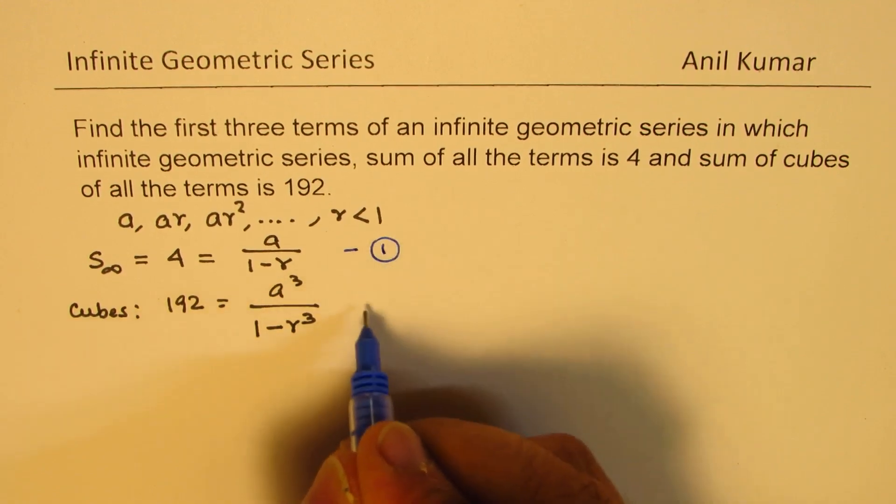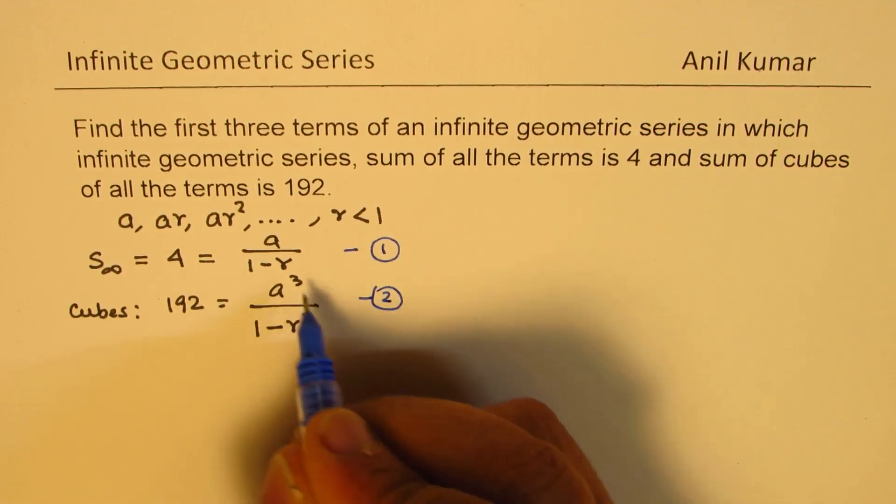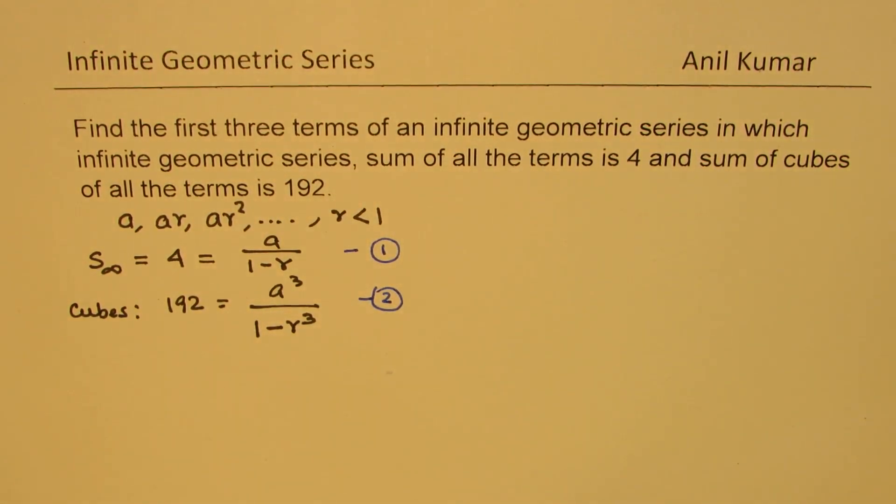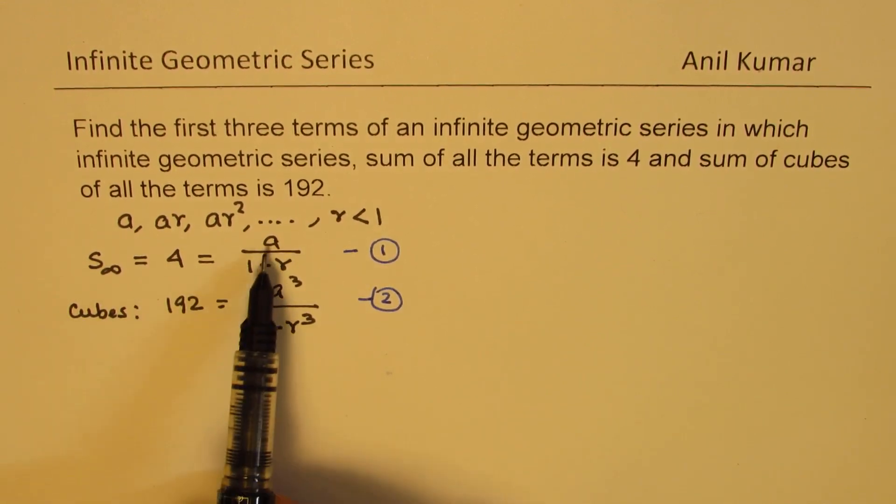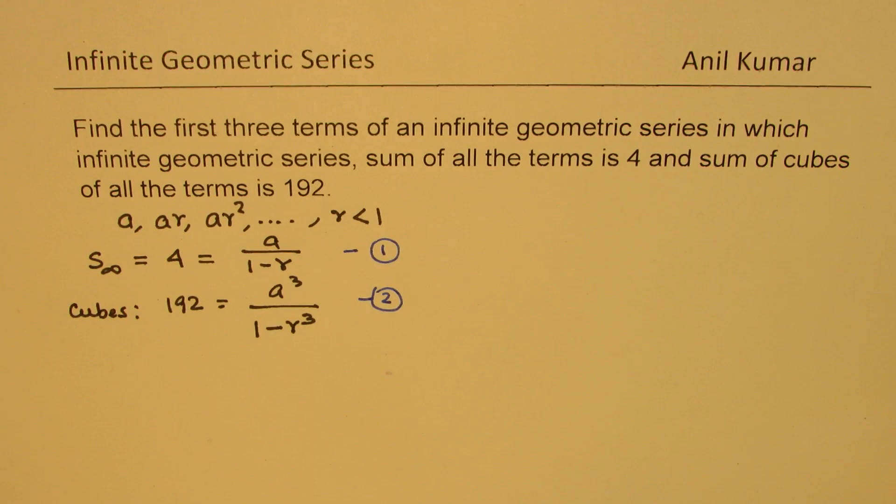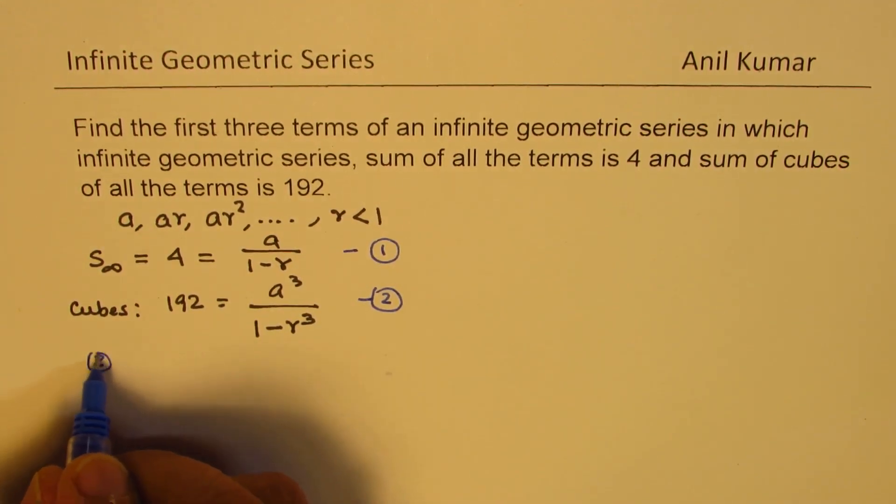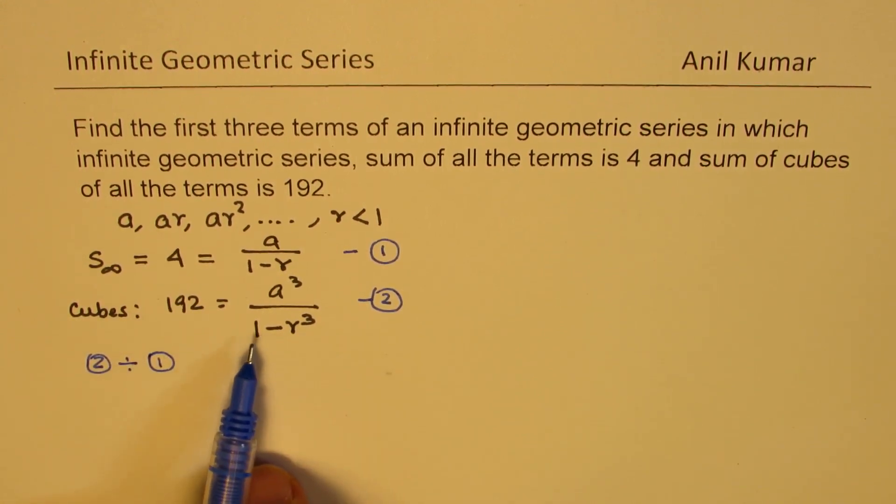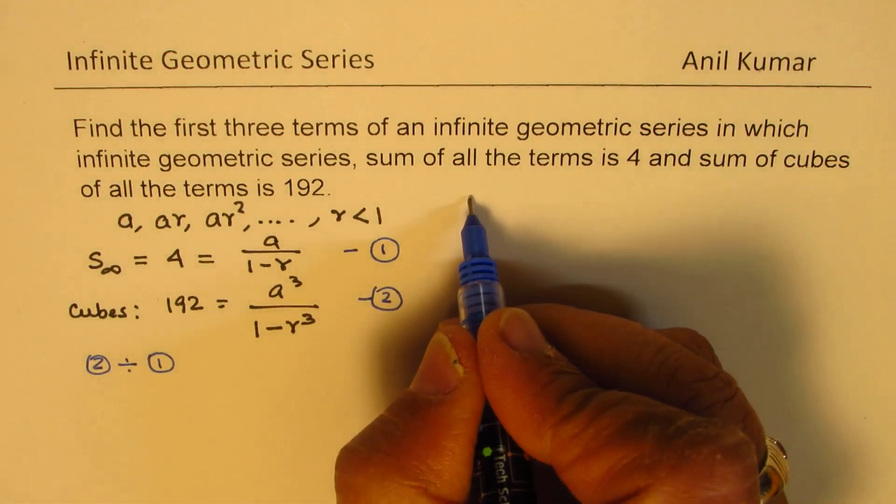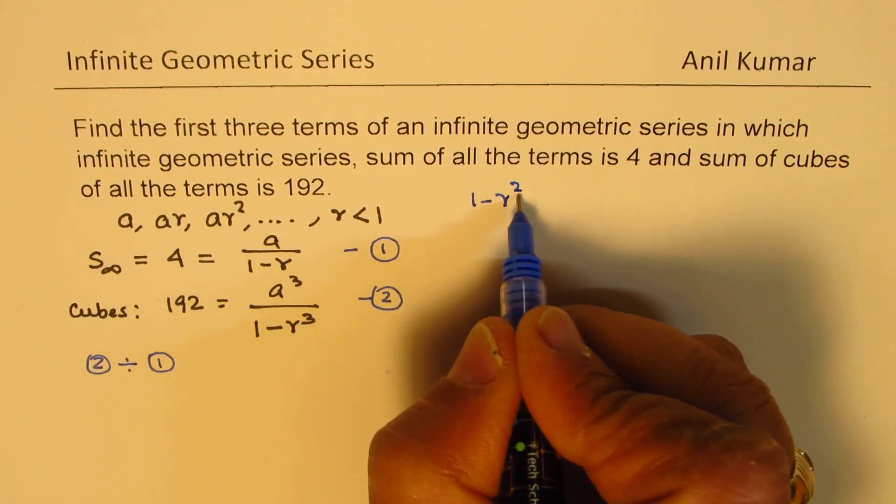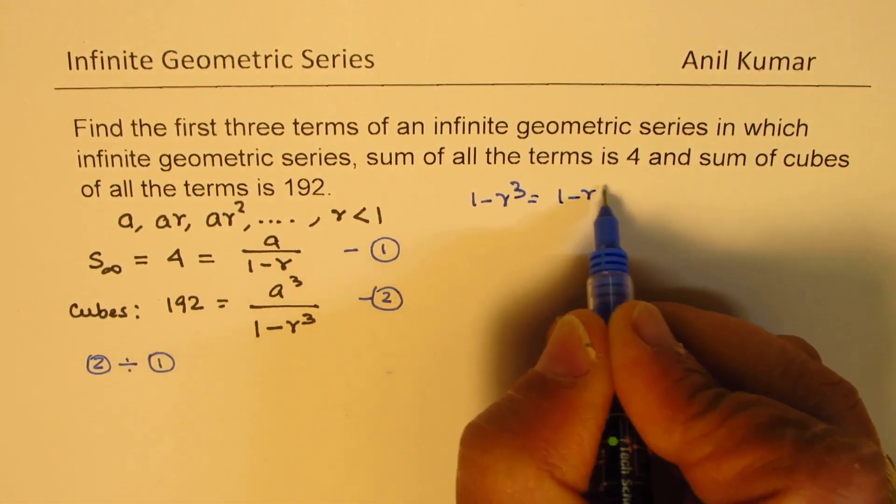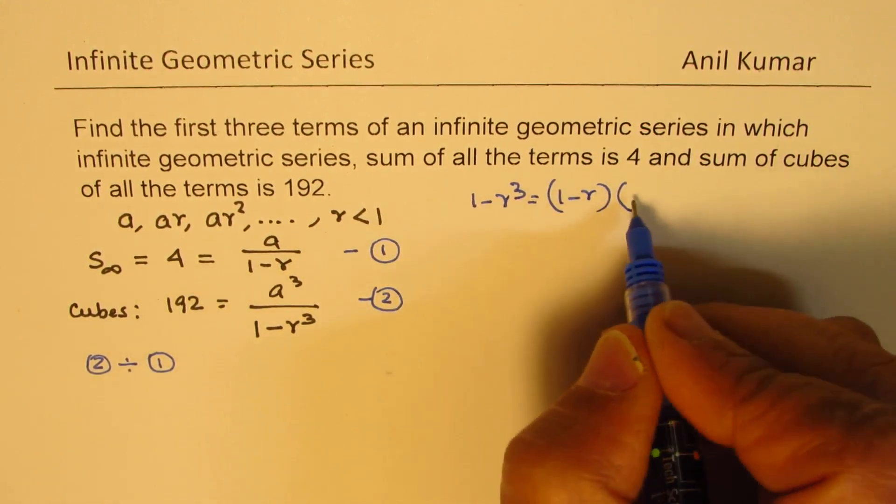We have the two equations and two unknowns. You can solve for the unknowns, A and R. We will do it in steps. Let us divide equation 2 by equation 1. Now, 1 minus R cube can be written as,